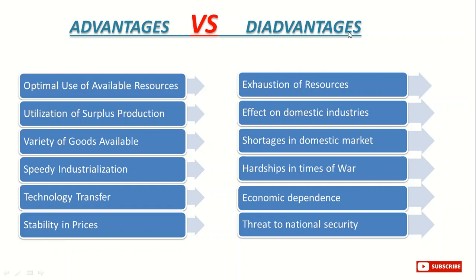Now, what are the disadvantages? Exhaustion of resources — if you are exporting a special product at a high level and using the raw material required to make that product, you can exhaust natural resources. For example, oil-rich countries — if they are exporting oil at a much higher level, after some time they will be deprived of their natural resources. Effect on domestic industries — if you are importing products, it could hamper your domestic industry. Shortages in the domestic market — if you don't plan properly and you export a specific product, it can cause a shortage of that product in your own domestic market. Hardships in time of war, economic dependence, and threat to national security.